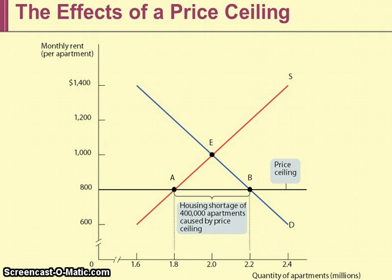A price ceiling is a price maximum. Think about the function of a ceiling: if you held a helium balloon and let go, the ceiling would stop it from flying into the atmosphere. Similarly, a price ceiling stops the price from rising up to equilibrium. If the government set a price ceiling above $1,000 in this market, it would be pointless — the equilibrium price would prevail because that's where the market wants to be.